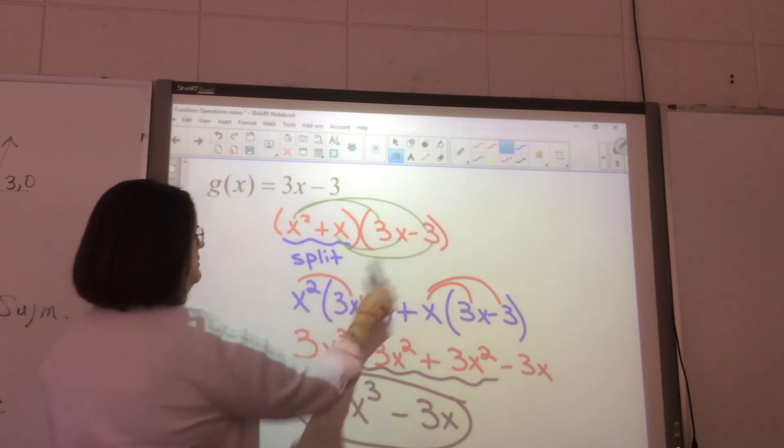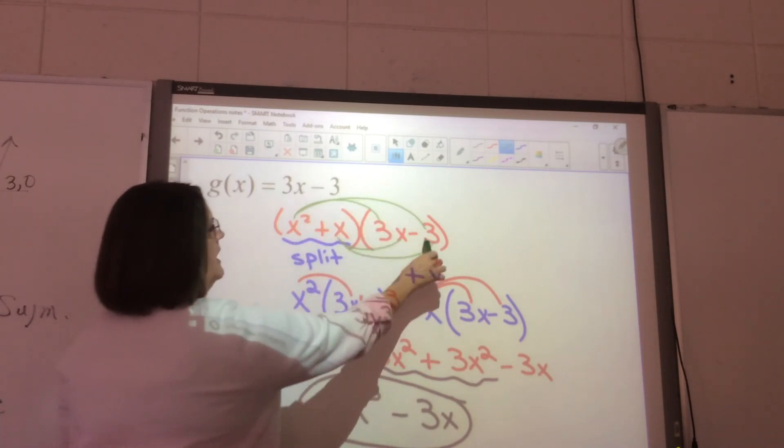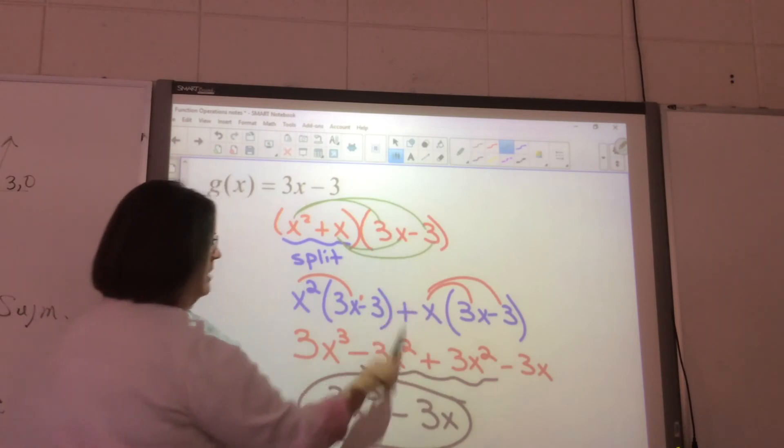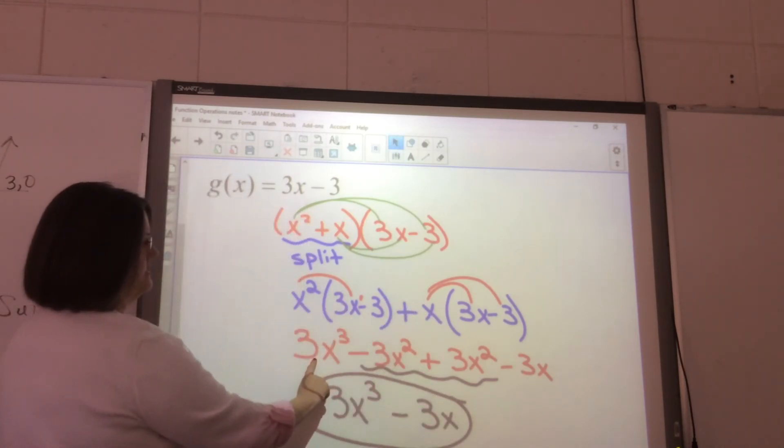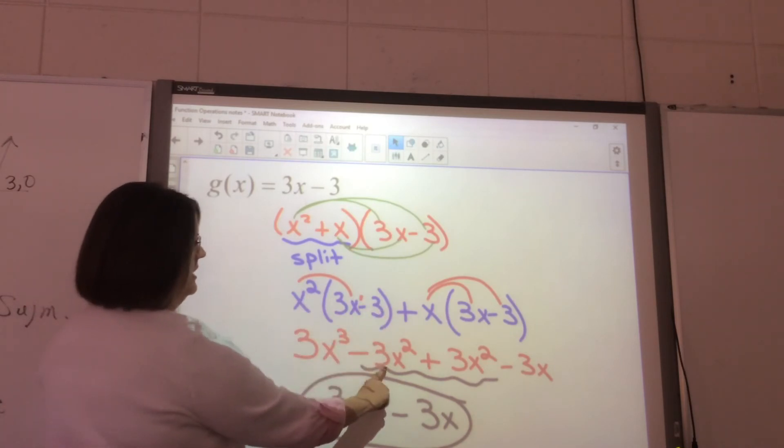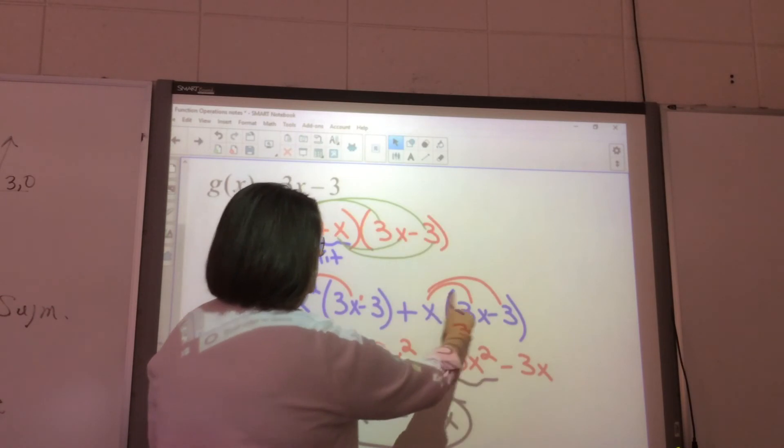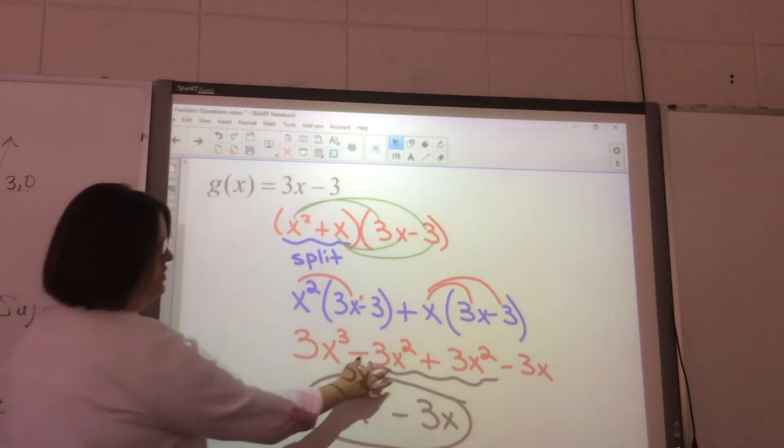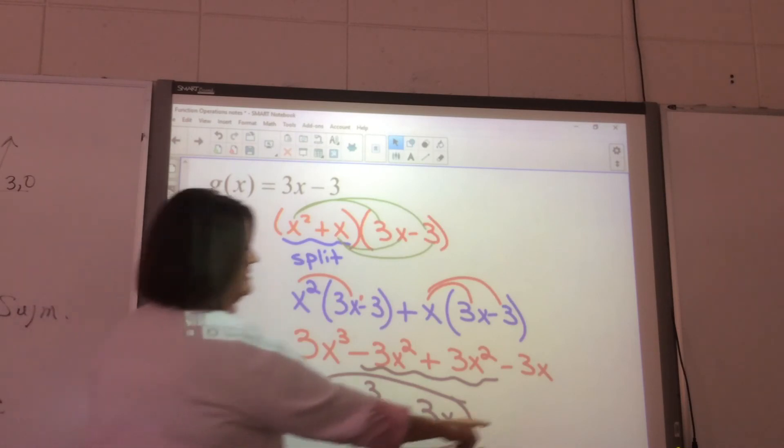That's what you get here. After you do all that, you add your like terms: x² times 3x = 3x³, x² times -3 = -3x², x times 3x = 3x², x times -3 = -3x. Then you put your like terms together—these cancel. Now, this and this are not alike—be very careful. This is x³ and this is x, so they cannot be put together.